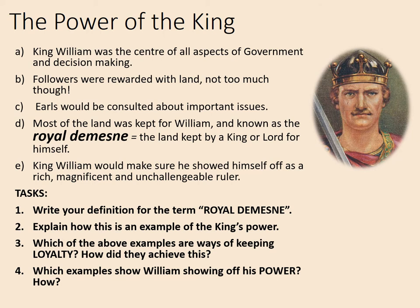So hopefully for royal domain we've got the idea that this is the land that's set aside for the king himself — that he owns and controls. This is an example of the king's power because it shows that land is being used as the main means by which he's controlling his followers. He's rewarding people with land but also consulting them on important issues, which makes them feel included in decision making. Crucially, he can take that land off them if they are disloyal.